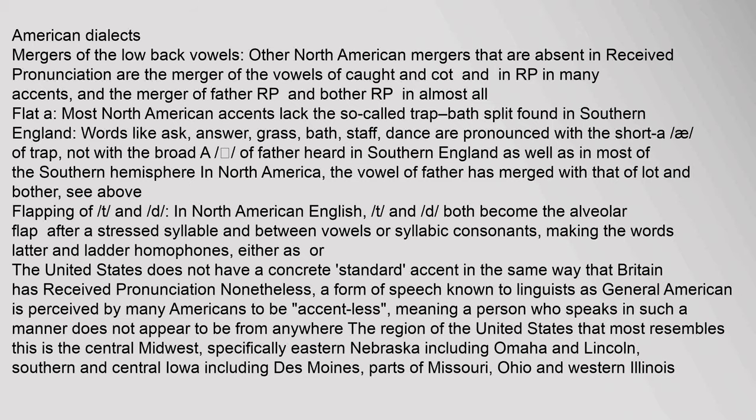Words like 'ask,' 'answer,' 'grass,' 'bath,' 'staff,' and 'dance' are pronounced with the short 'a' of 'trap,' not with the broad 'a' of 'father' heard in southern England and most of the Southern Hemisphere. In North America, the vowel of 'father' has merged with that of 'lot' and 'bother.' In North American English, t and d both become the alveolar flap after a stressed syllable and between vowels or syllabic consonants, making the words 'latter' and 'ladder' homophones.